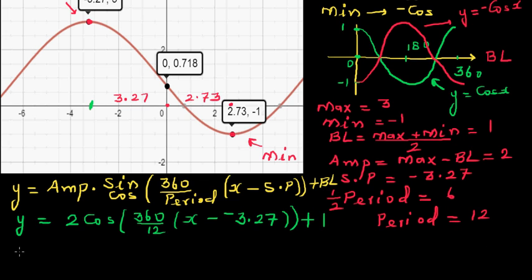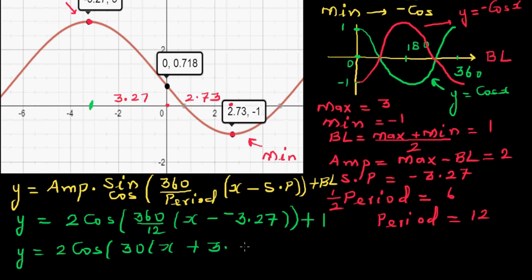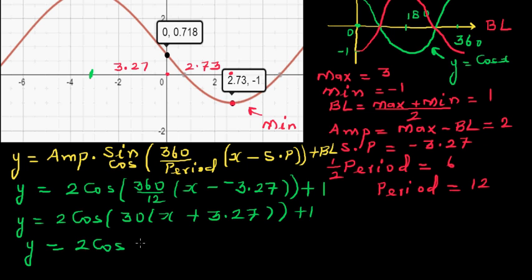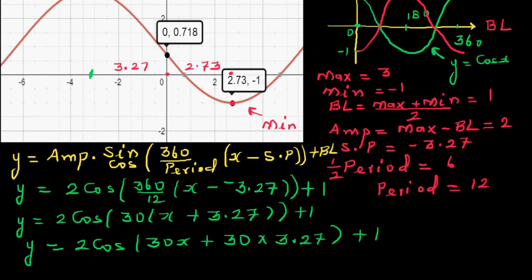Simplifying: 360 divided by 12 equals 30. So the equation becomes y equals 2 cos(30(x + 3.27)) + 1. Expanding, this is y equals 2 cos(30x + 30 times 3.27) + 1. I'll use my graphing calculator to compute 30 times 3.27 and confirm the graph.